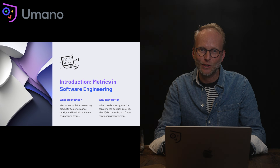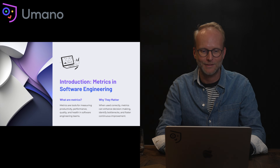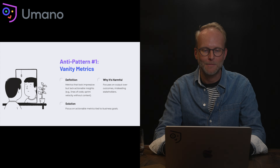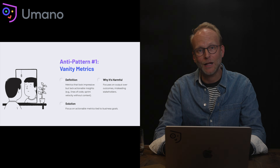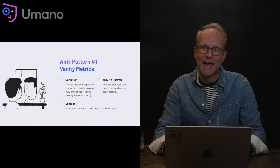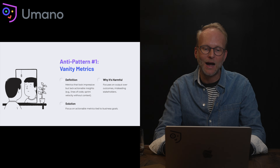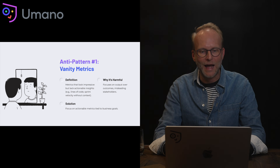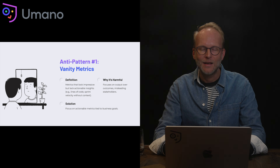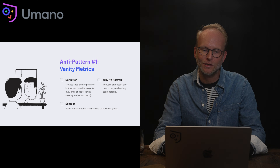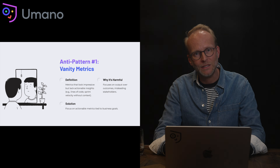Let's dive in and take a look at the top 10 anti-patterns for using metrics in your developer experience. Anti-pattern one: vanity metrics. Vanity metrics make you look good but ultimately lack actionable insight — for example, lines of code. They're harmful because they focus on output over outcome and mislead stakeholders. The solution is to focus on actionable metrics tied to the outcomes the team or business has defined as primarily important to your success.